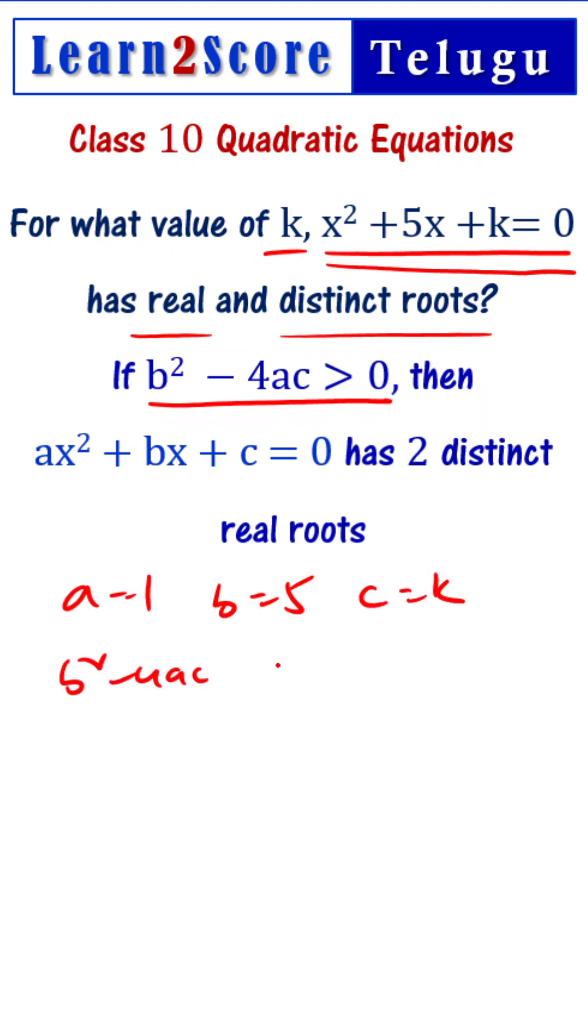So b² - 4ac equals 5² - 4(1)(k). This is 25 - 4k.